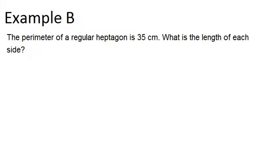In example B, it says the perimeter of a regular heptagon is 35 centimeters. What is the length of each side? So a heptagon has 7 sides, and again it says it's regular, so all 7 sides are the same length.